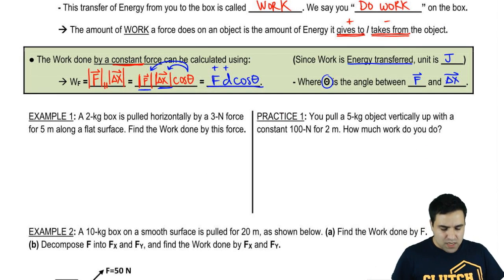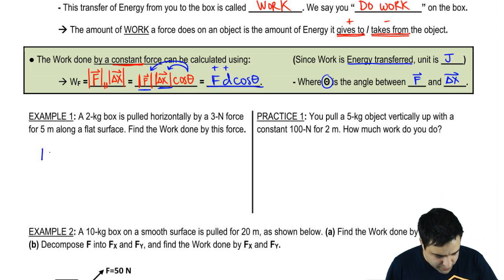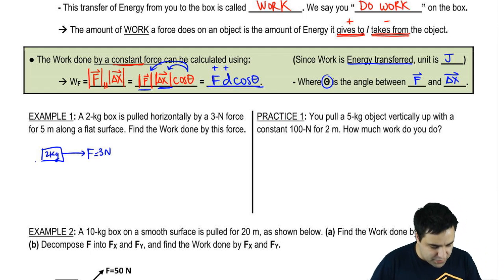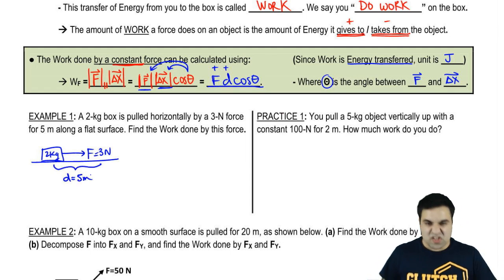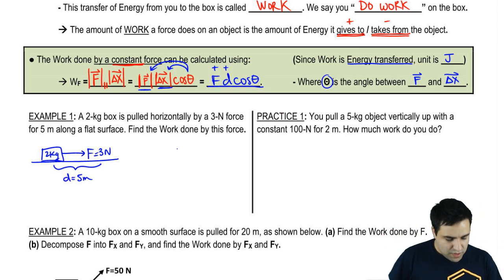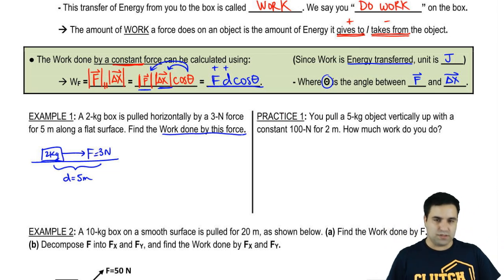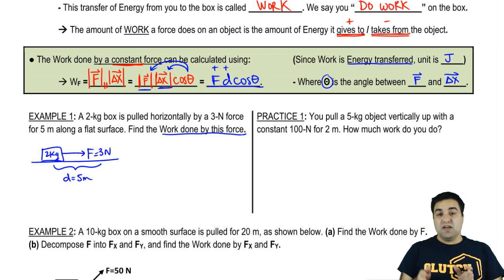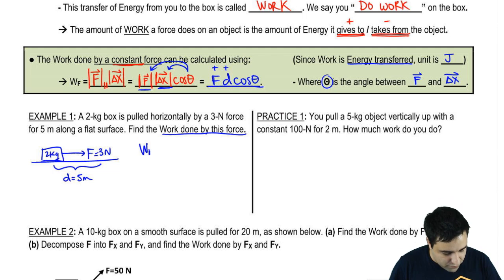I'll do one and I want you guys to do one. So a two kilogram box is pulled horizontally by a three Newton force, let's do that real quick. Two kilogram box is pulled horizontally by a force of three Newtons for five meters, that's my distance. So I did this for a distance of five meters. So the idea is I pull and then once the box has covered five meters, I just let it go. I want to know what is the work done by this force. So works are done by forces. The work done by a force, f is right here.